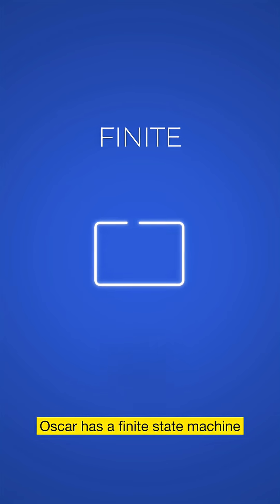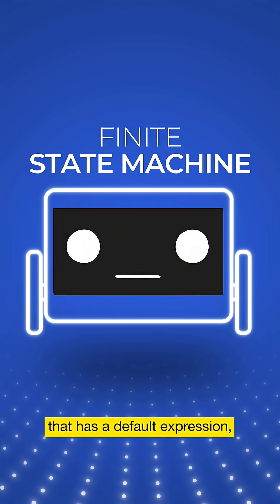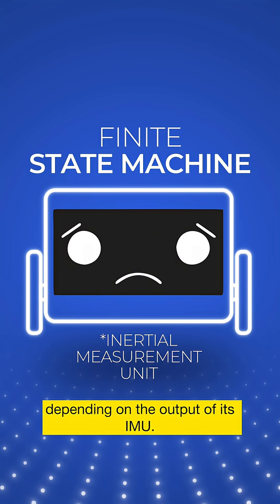Inside, Oscar has a finite state machine that has a default expression that changes depending on the output of its IMU.